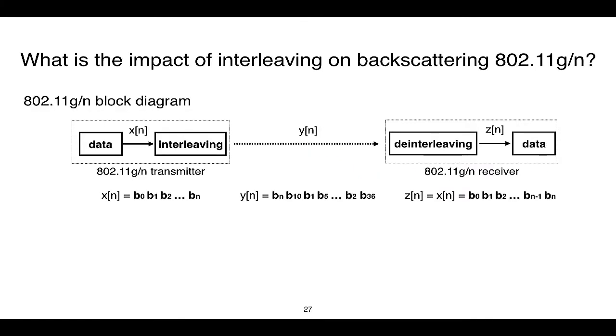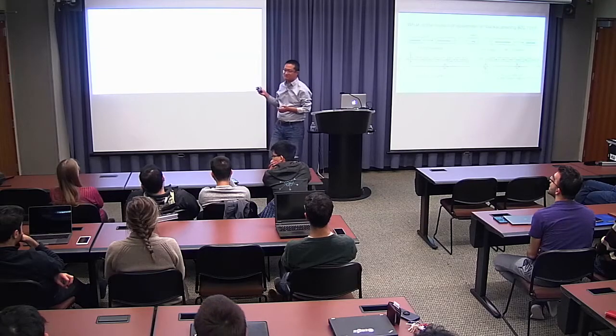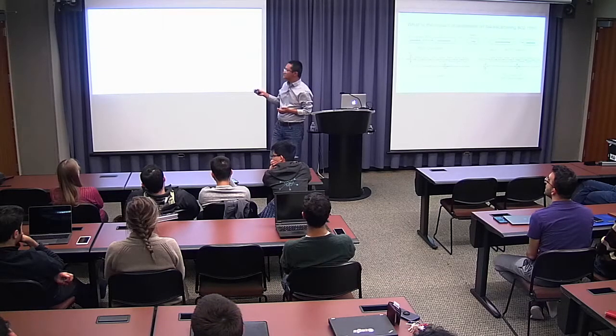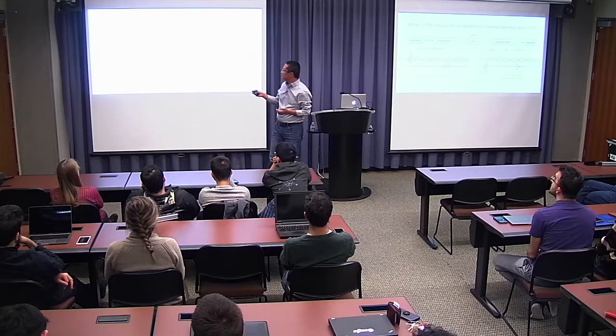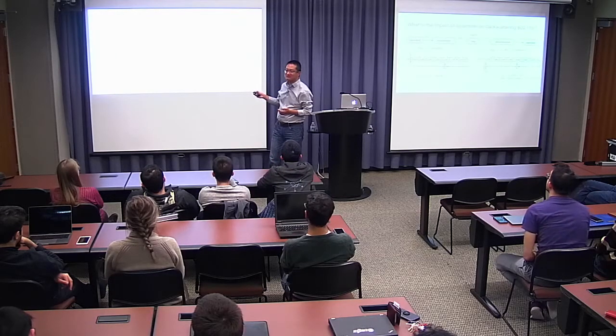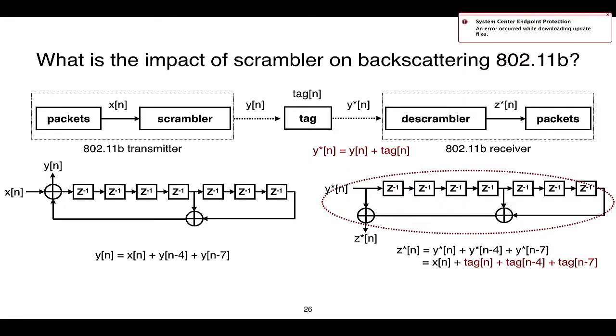Going back one slide: y* of n equals y of n XOR tag(n) — it's an XOR, not addition. When the tag transmits 0, the reflected signal is the same as the incoming Wi-Fi signal; when the tag transmits 1, the reflected signal differs. This XOR operation is compatible with the scrambler's structure, which is why the encoding works cleanly.